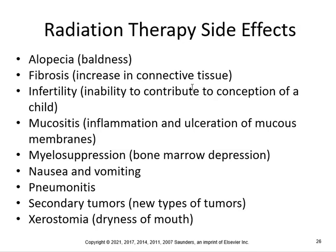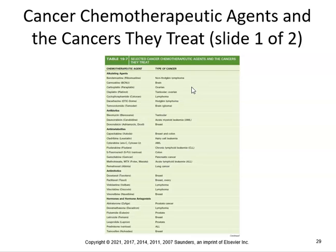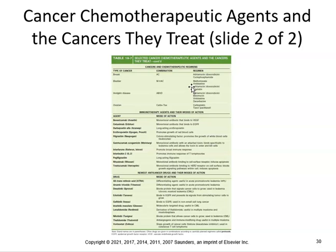Make sure you know the radiation side effects: alopecia means baldness; fibrosis means increasing connective tissue; infertility means inability to contribute to conception; mucositis is inflammation of mucous membranes; myelosuppression is bone marrow depression; nausea, vomiting, pneumonitis, secondary tumors, and xerostomia — dryness of the mouth — are all common. Chemotherapy agents include alkylating agents, antibiotics, antimetabolites, and hormonal agents. The specific cancers they treat are FYI only.